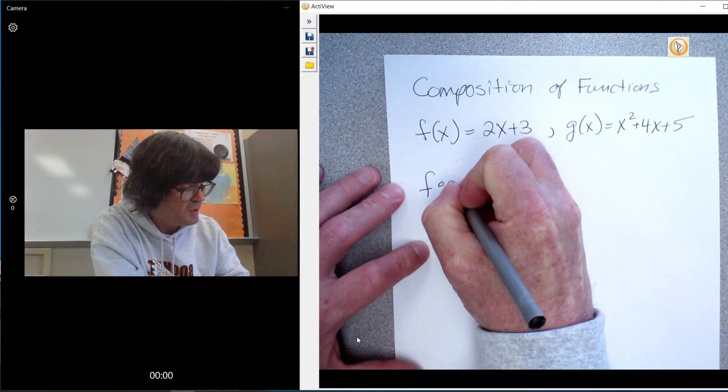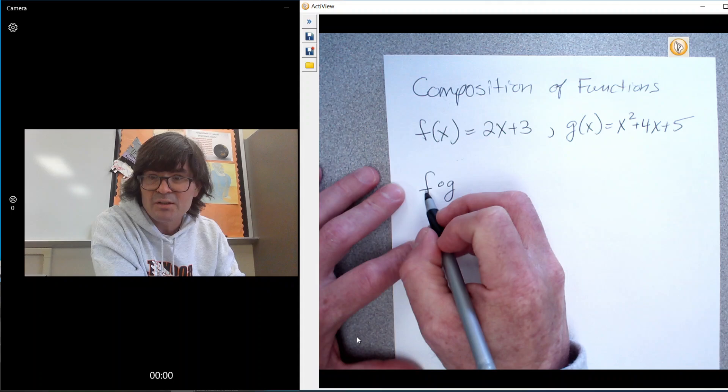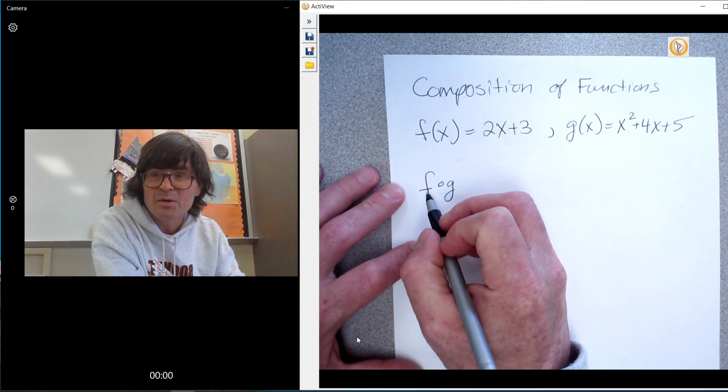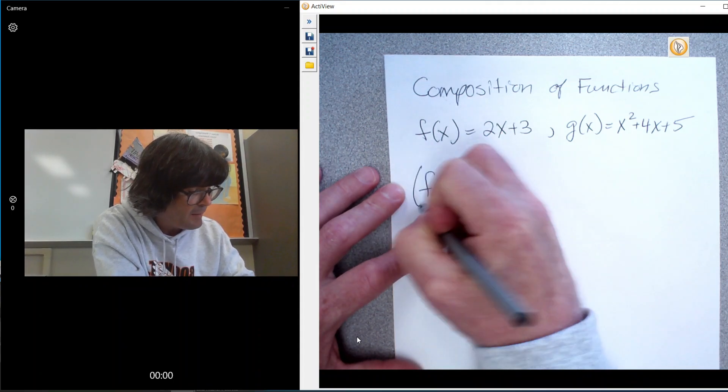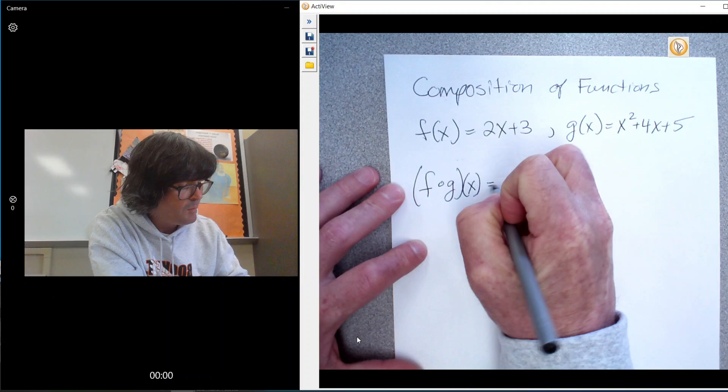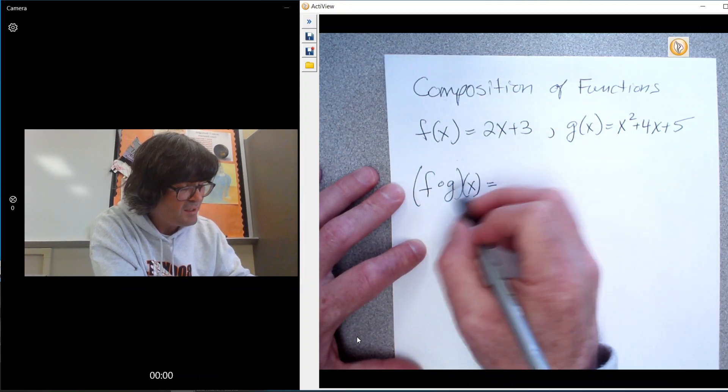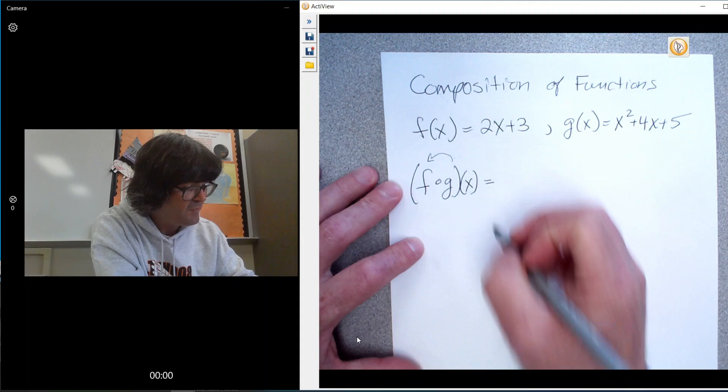The first way to write composition of functions is with this little circle. This reads f composed of g. And what that means, and you'll see a little x right here, what that means is you take function g and you stick it into function f.